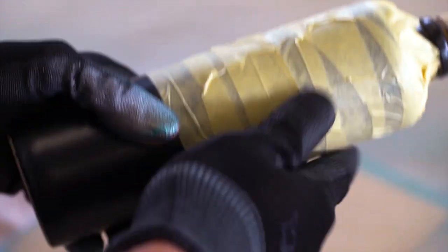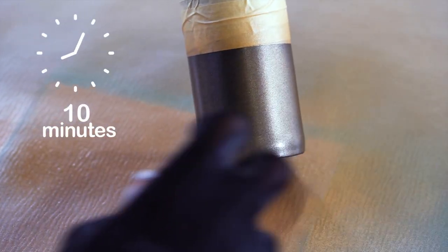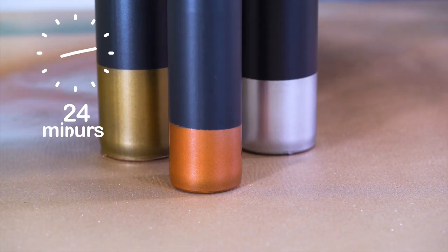At 20 degrees Celsius, Montana Metallic Effect sprays are dust dry after approximately 10 minutes, touch dry after approximately 20 minutes, and fully cured after 24 hours.